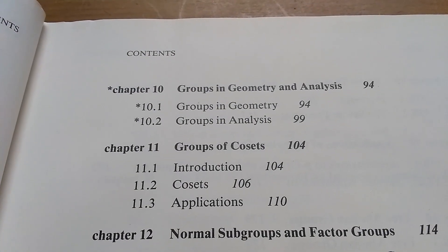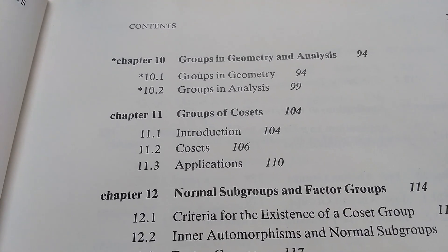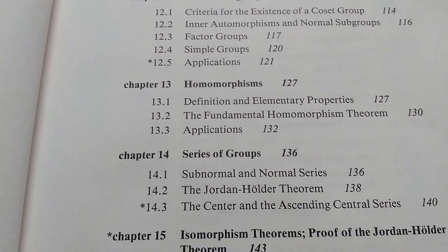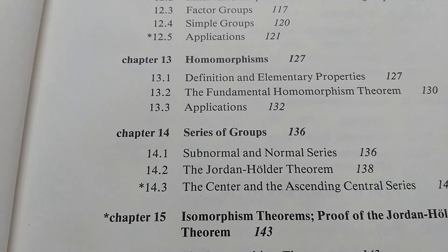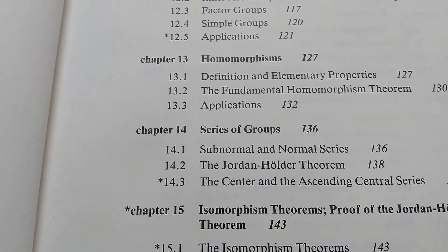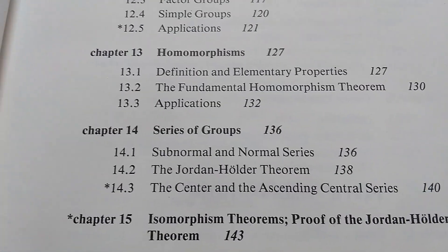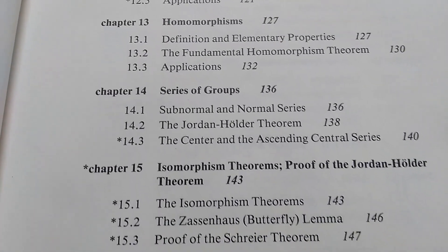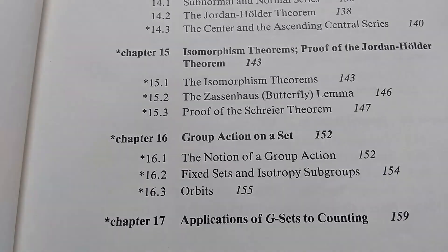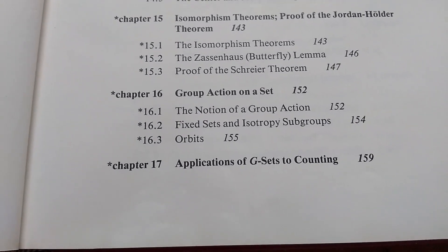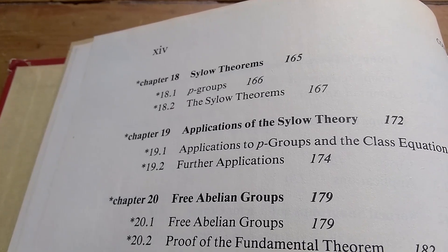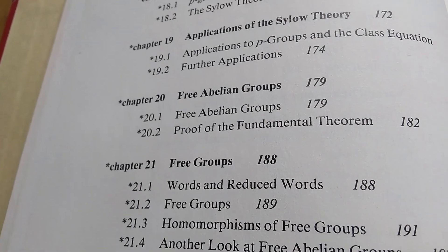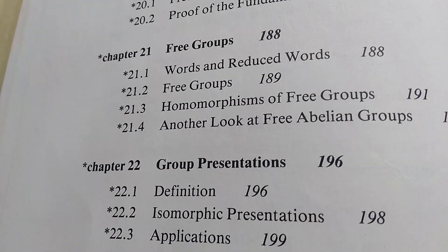He talks about some more specific groups in geometry and analysis. Groups of cosets, normal subgroups and factor groups, homomorphisms, series of groups. I remember after I used this book for self-study, I remember going back to this book while in grad school to reference information on series of groups, because that's not something that is always found in all abstract algebra textbooks. Group actions, that's kind of nice. Applications of G-sets to counting, cool stuff. And it just keeps going. Sylow theorems, applications of the Sylow theory, free abelian groups, free groups, group presentations.